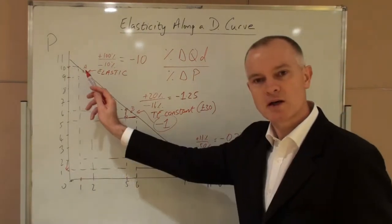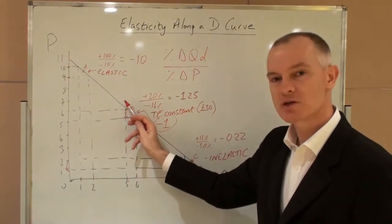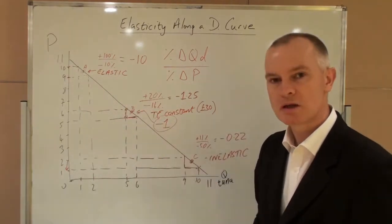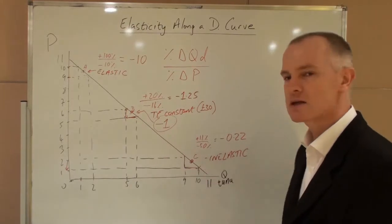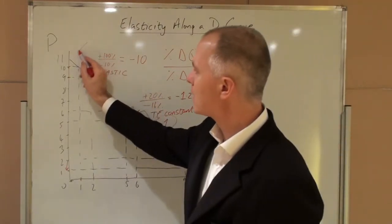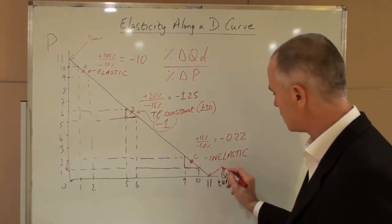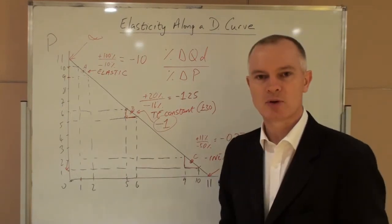Along a straight line demand curve, demand goes from being elastic at the top section, to unit in the middle, and to inelastic on the bottom section. Strictly, at the very ends of the curve, this is infinitely elastic at the top, and has zero elasticity at the bottom.